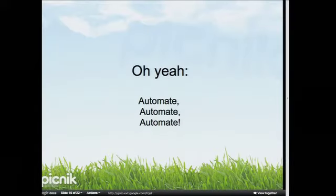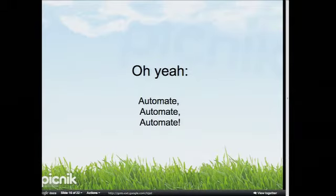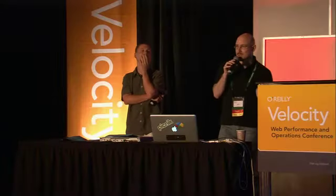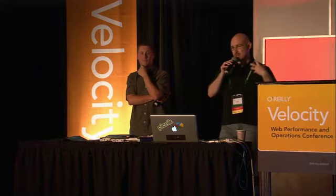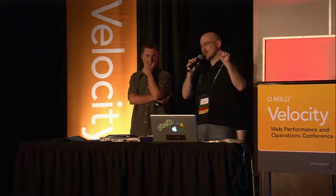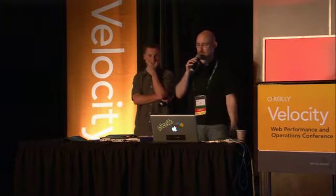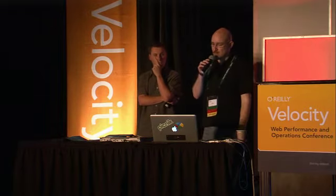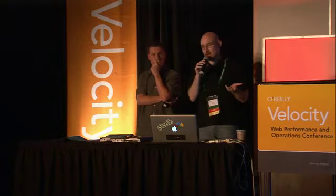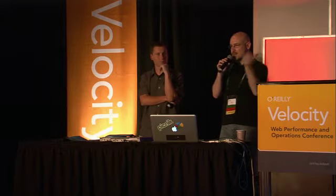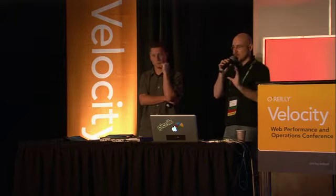Let's not forget about automation. Just because you have more people doesn't mean you want to create a 'meat cloud.' You still need to automate, automate, automate. More people lets you build better automation. You get the benefit of those people when things go wrong, but automation is still really important. Getting more done with fewer people is one reason Picnic was able to get as far as it was with one person. But let's try to get really far with two people — let's not back off on automating.